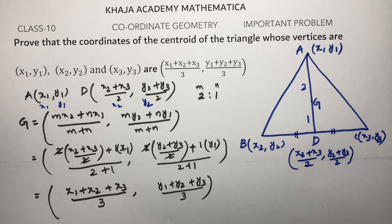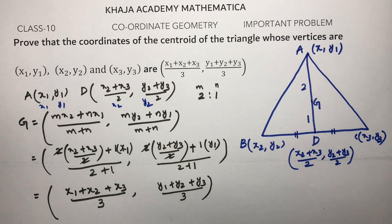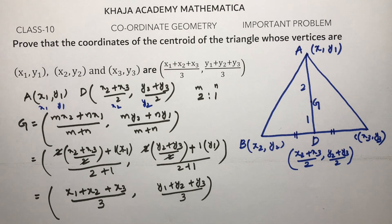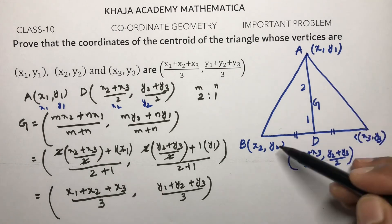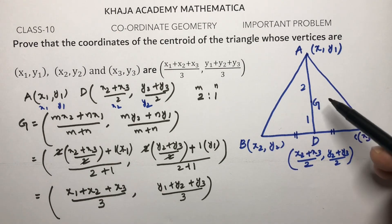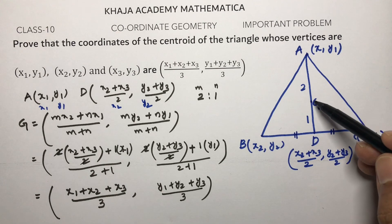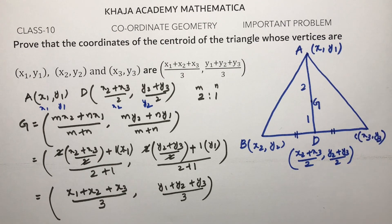So the centroid formula is x1 plus x2 plus x3 by 3, y1 plus y2 plus y3 by 3. Sometimes they ask to find the centroid, and sometimes to find the point of intersection of medians — where all three medians of a triangle meet is called the centroid.